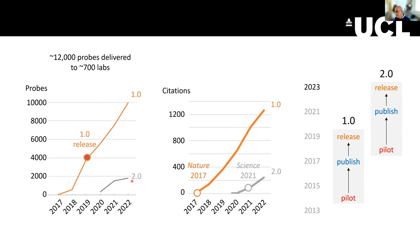Another indication of uptake is the number of citations to these papers. The timeline for the 1.0: we piloted them in 2014, published in 2017, and released to the public in 2019. The idea with the 2.0s is pretty much the same. We were supposed to release them in late 2022, but that did not happen because the semiconductor industry is in big upheaval. We're hoping for early 2023.